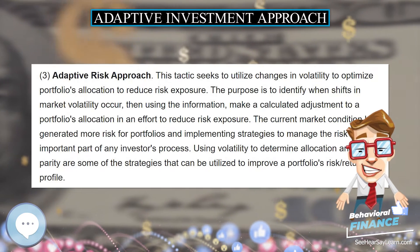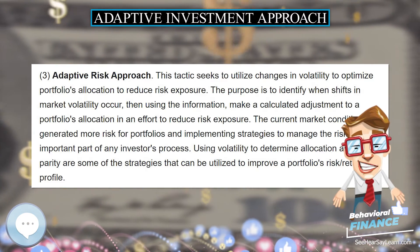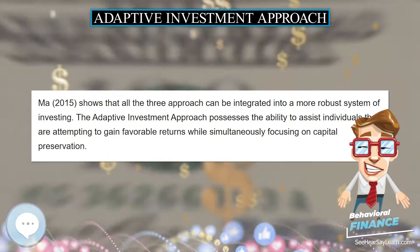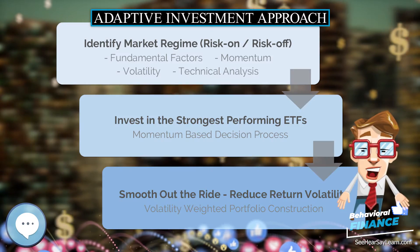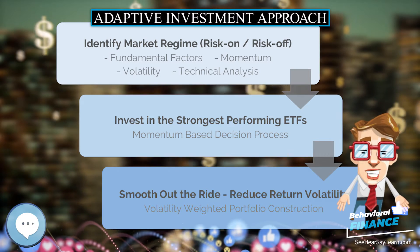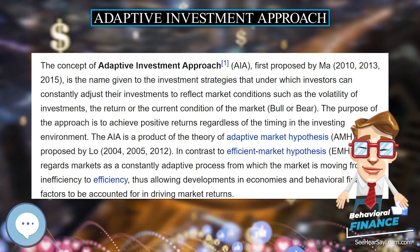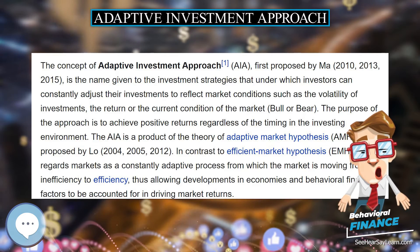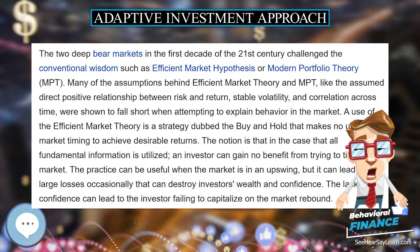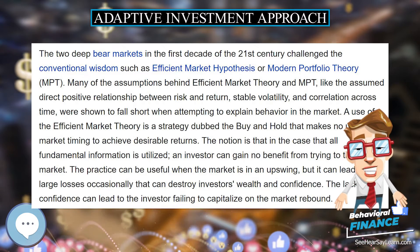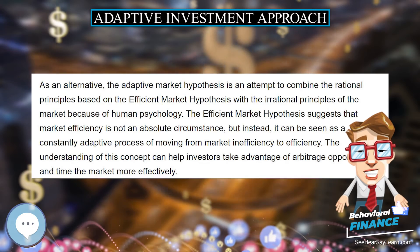2. Adaptive Return Approach. This strategy's purpose is to shift allocations to the investments with the most desirable returns. The aim is to detect underlying trends in the market and capitalize on them. The approach can be categorized as a momentum strategy or a methodology of following trends. The ongoing study of the impact of human psychology on the market has uncovered that investors tend to react slowly to information when it first surfaces, but eventually overreact towards the closing of the trend.